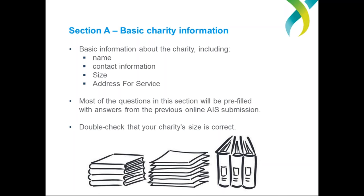Ensure you enter your address for service correctly in question four. Your address for service is the address — often an email address — which you wish the ACNC to use to send all correspondence to your charity. This is a vital detail the ACNC really wants all charities to check, double check and triple check. This section also asks you to state the size of your charity: small, medium or large. It is important that you respond correctly, as your response will shape the questions you'll be asked later in the AIS and affect the amount of information you'll need to supply.